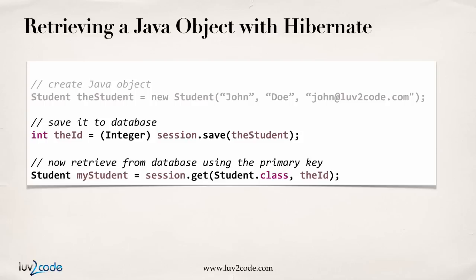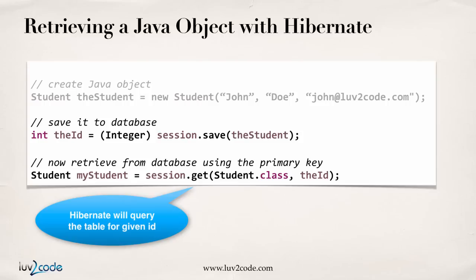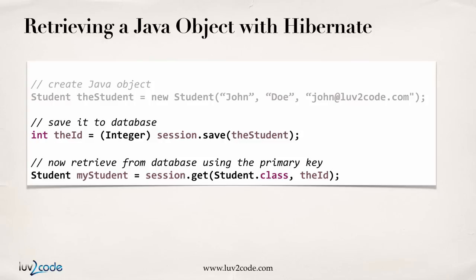Now we have something in the database — how do we retrieve it? There are a number of different options, but here's a very basic example using the primary key. From the previous code, we created the student, saved the student, and got back an ID which is the primary key. Now I'll use that information to retrieve from the database using that primary key. Here I make use of session.get, tell it what I want to get — Student.class — and give the ID. Behind the scenes, Hibernate will look at the table called student, find the student whose primary key matches that ID, and return it to you. Hibernate does all the low-level work: running the query, getting the data, constructing the object, and returning it to your program. You can see how easy it is to make use of Hibernate — it minimizes a lot of the low-level JDBC code you would have had to write in the past.